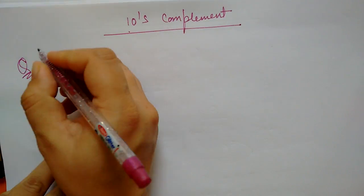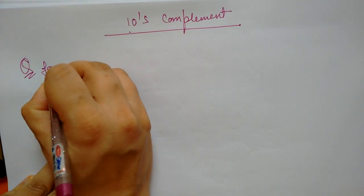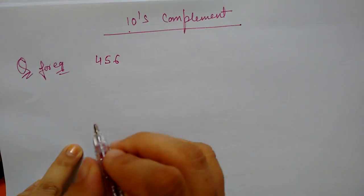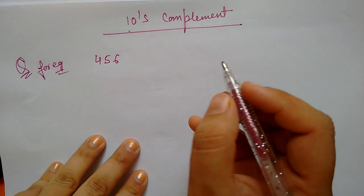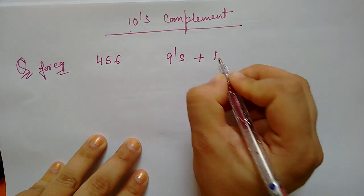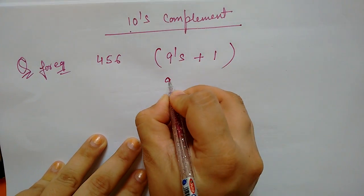How do you find a 10's complement? For example, you will find a 10's complement. First, you will find a 9's complement and you will add 1. How do you find a 9's complement?